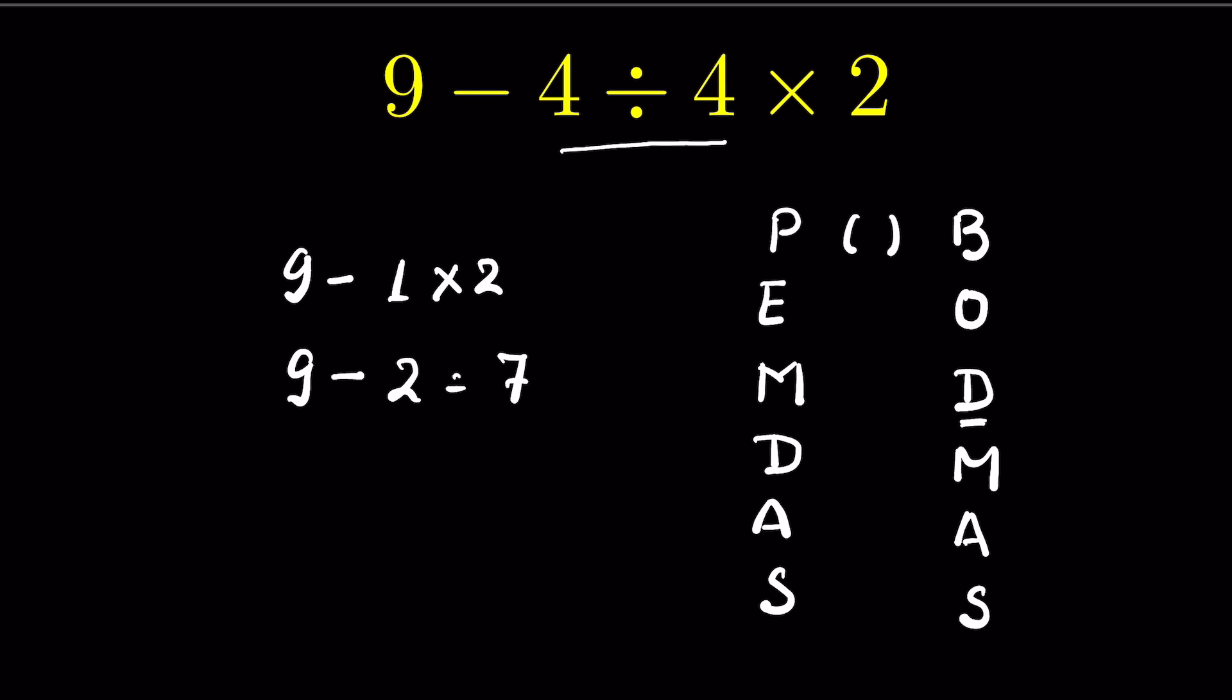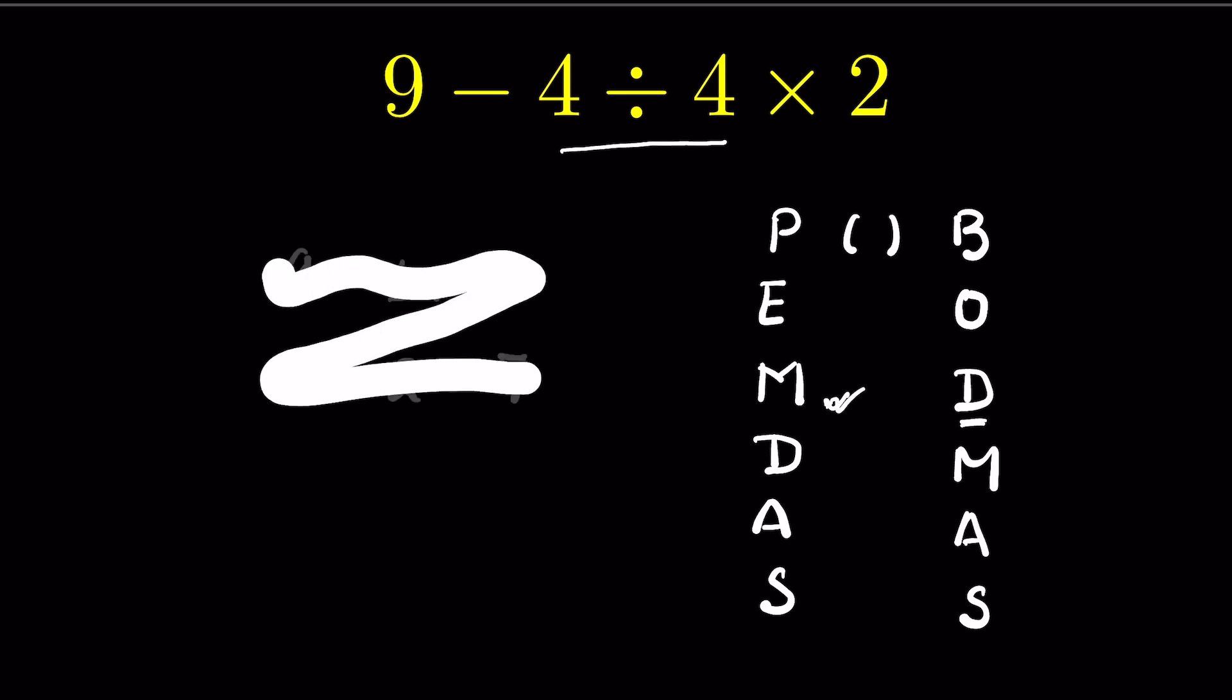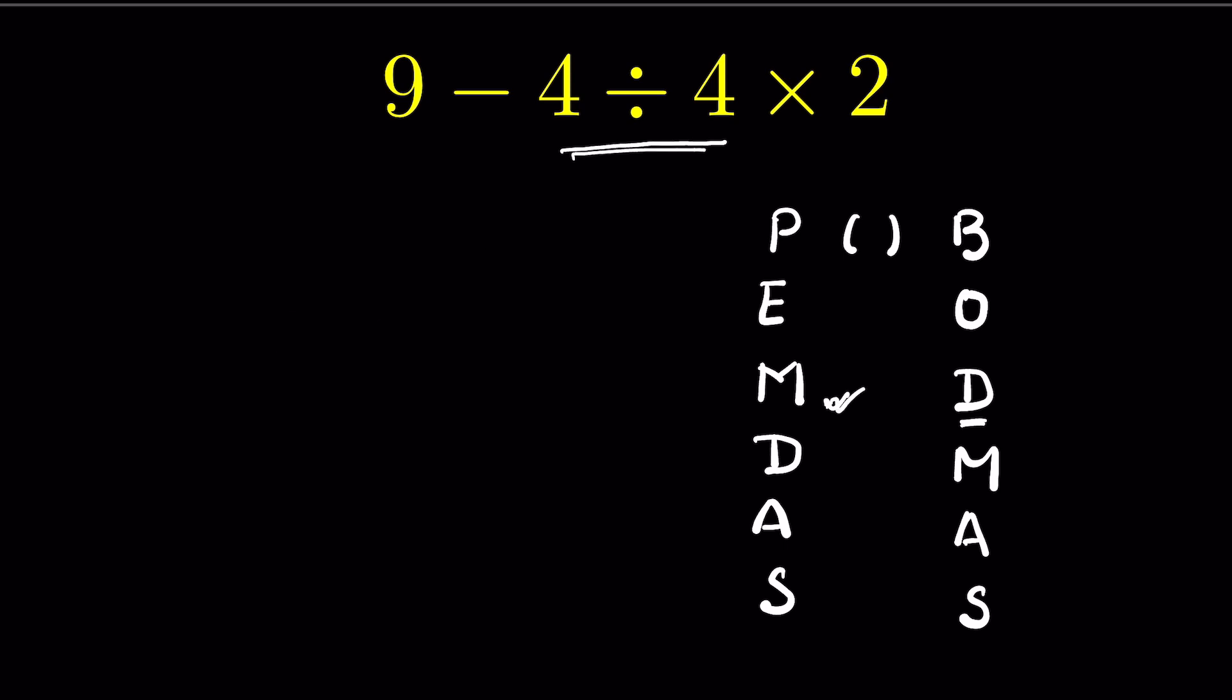if you follow the PEMDAS rule, multiplication comes first. So what will be the answer if you do multiplication first? If you do multiplication first, then in that case, 9 minus 4 divided by 4 times 2 becomes 9 minus 4 divided by 8.